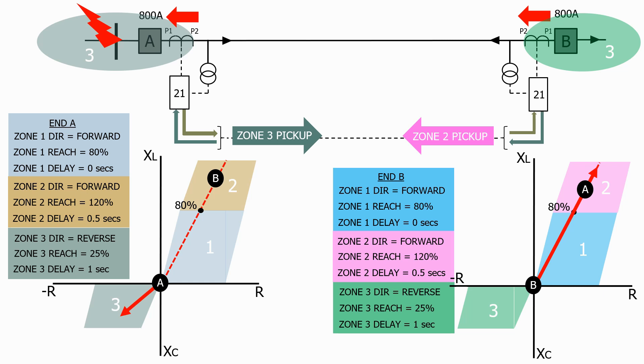Normally what would happen next is that the impedance relay at end B would trip on a zone 2 fault after half a second. But because the end A impedance relay knows the fault is in the reverse direction and therefore not on the feeder we're protecting, it blocks the zone 2 impedance element at end B from operating.